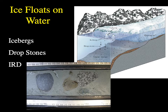As glaciers move down their valleys, they may eventually reach lakes or the ocean. Because ice floats on water, we can lose ice through the calving of icebergs, which can float a significant distance from the glacier's edge. Since glaciers pick up enormous amounts of sediment as they move over land, these icebergs are full of not only ice but also sediment and continental material.